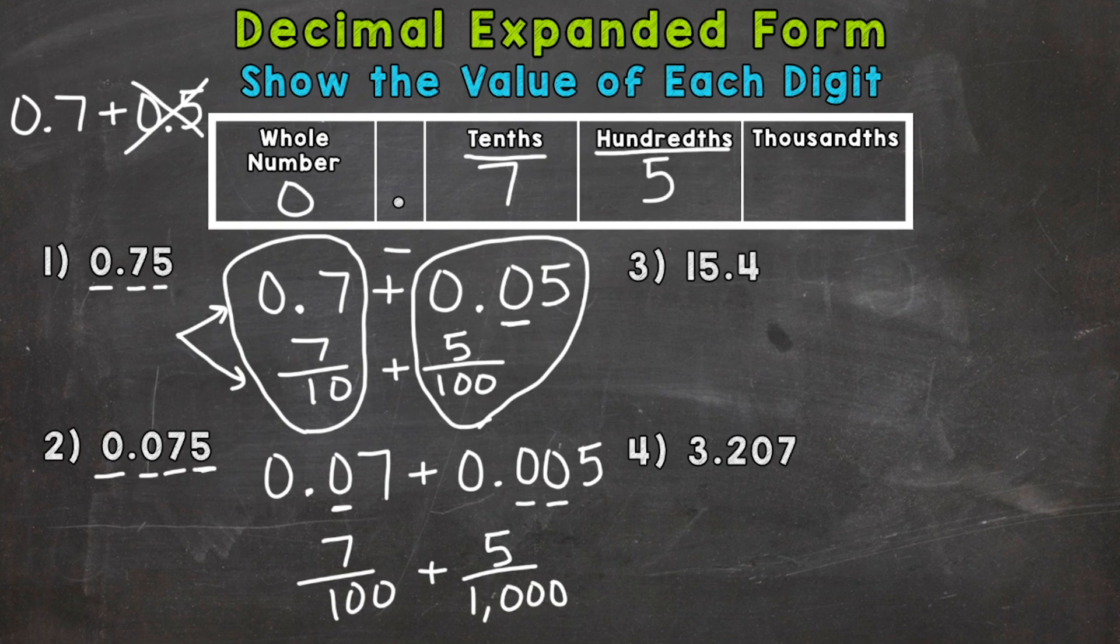All right, on to number three and four, where we're going to have a whole number and a decimal. So for number three, we have fifteen and four tenths. So let's put the whole number in expanded form first. So start with the greatest value digit, the digit furthest to the left, and that happens to be this one. So what is the value of that one?